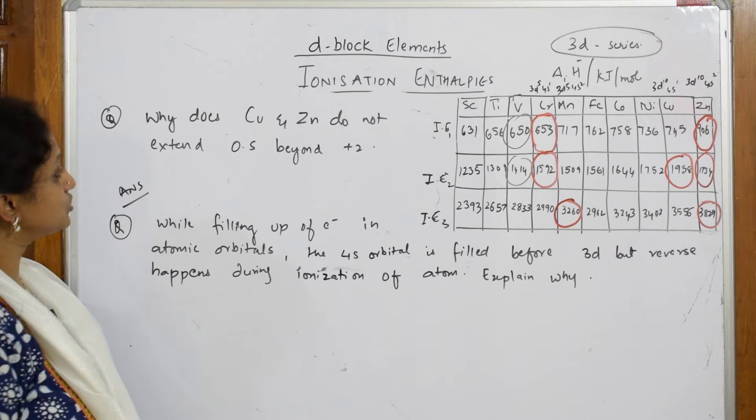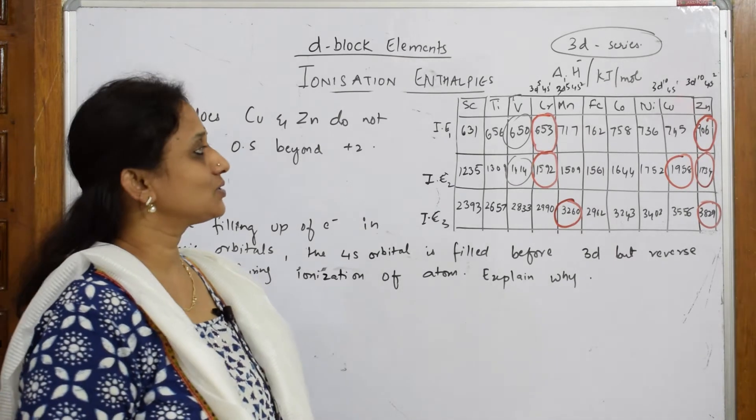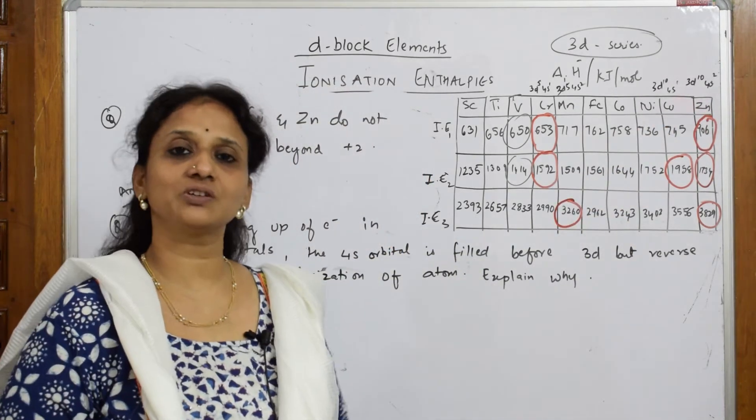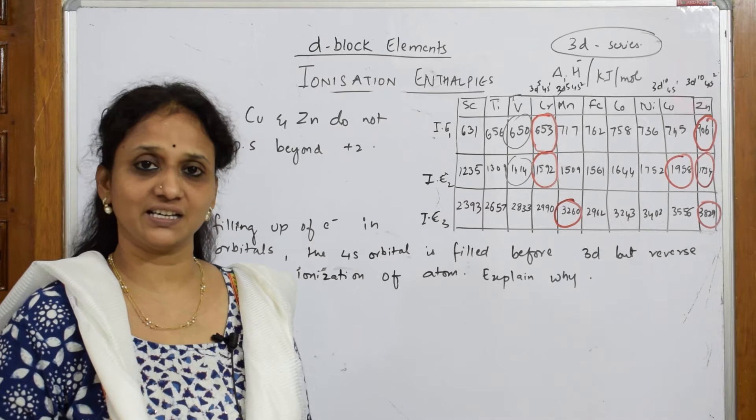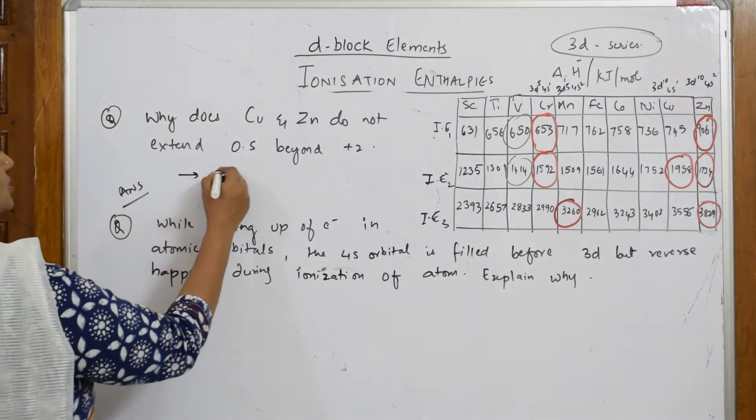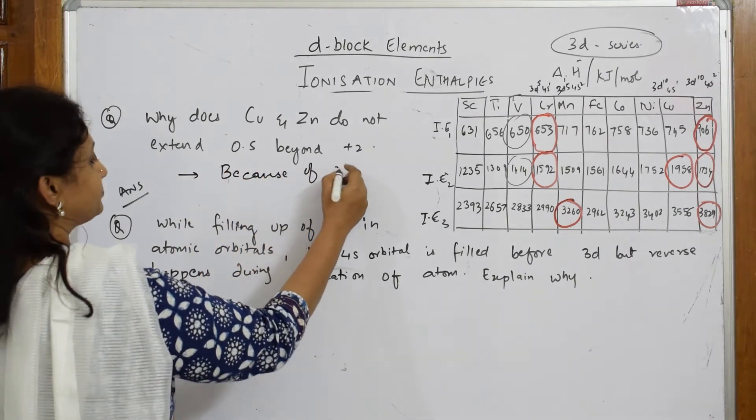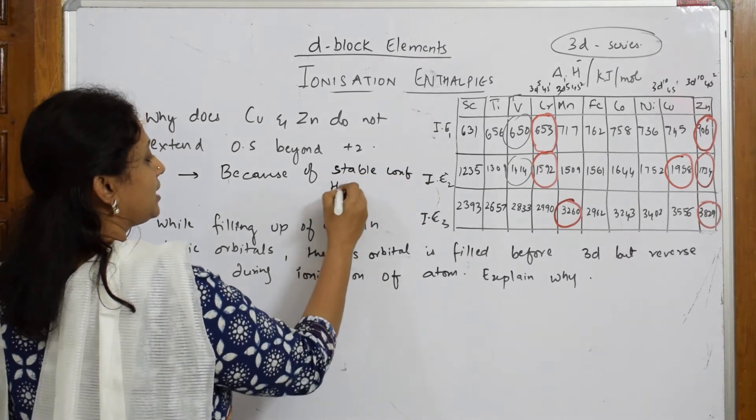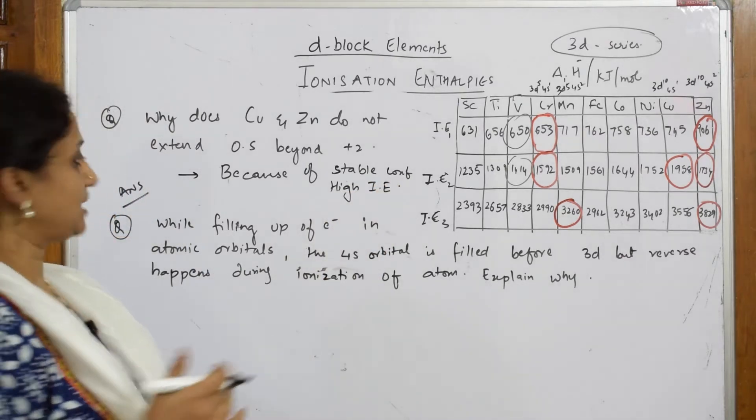Let us read: Why does copper and zinc not extend oxidation state beyond two? Simple, right? Copper is here and zinc is here. Why don't they extend beyond two? Because of their stable configuration, and because of this stable configuration, ionization enthalpy is very high. For stable configuration, you can write it in one word - simple answer: because of stable configuration and high ionization enthalpy.